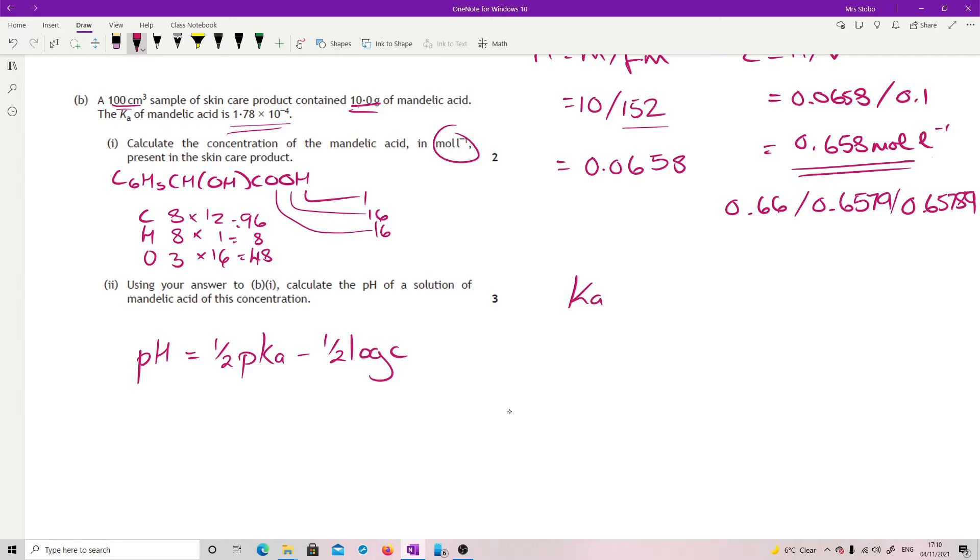So 1.78 times 10 to the minus 4. To get the pKa, we do the inverse log of the Ka and that will give us 3.75. So I'm going to do a half of 3.75 minus a half log...